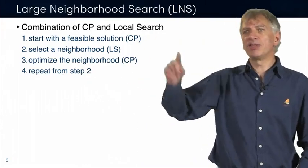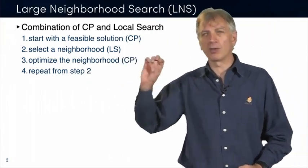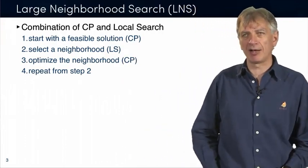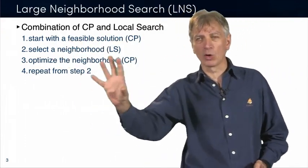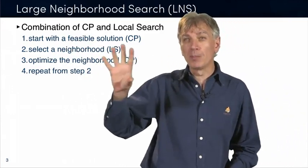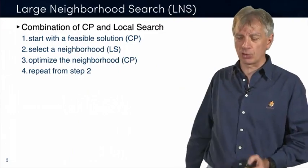And then the last part is basically repeating them forever. As long as you have time, you will do that for improving the quality of the solutions that you have. So this is large neighborhood search. It's a combination of constraint programming and local search, but the local moves are big moves. You explore a big search space, and you use constraint programming to explore it.